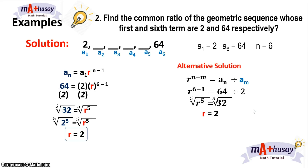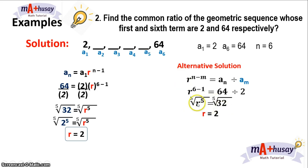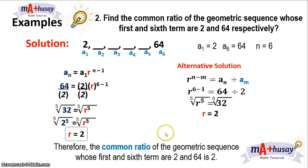In this case, you can solve it mentally. You take 64 divided by 2, then get the fifth root of 32 — because 6 minus 1 is 5, that's why you get the fifth root of 32. In this problem, the common ratio of the geometric sequence whose first and sixth terms are 2 and 64 respectively is 2.